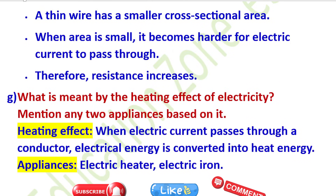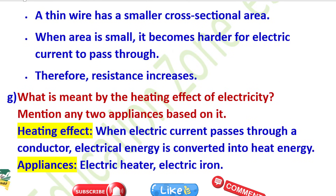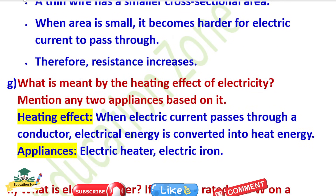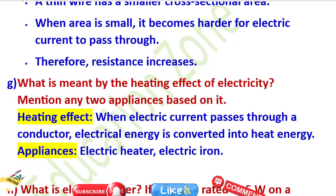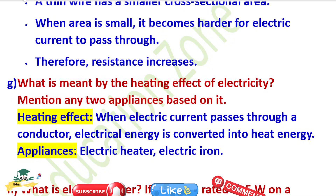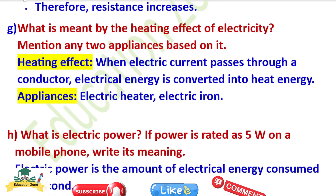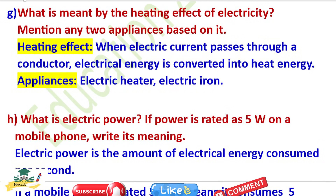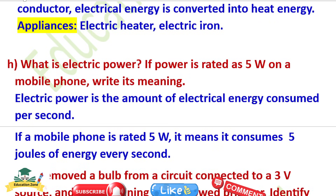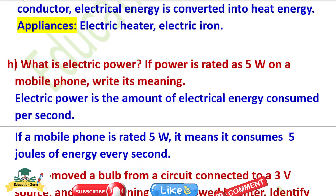Question G: What is meant by the heating effect of electricity? Mention any two appliances based on it. When electric current passes through a conductor, electrical energy is converted into heat energy. Appliances based on this are the electric heater and electric iron.